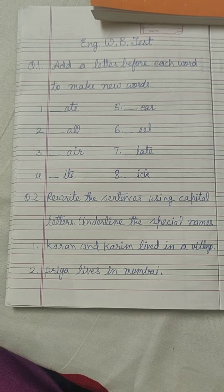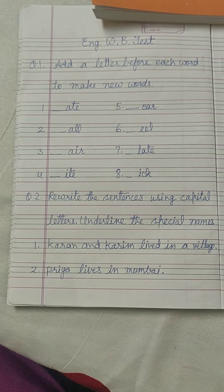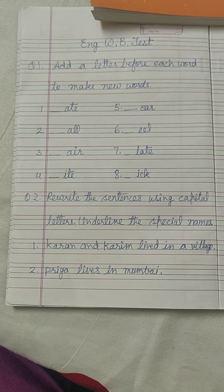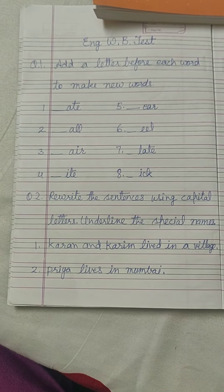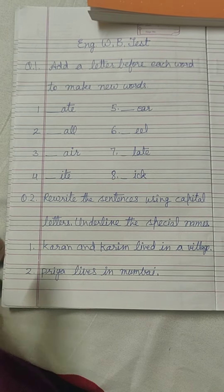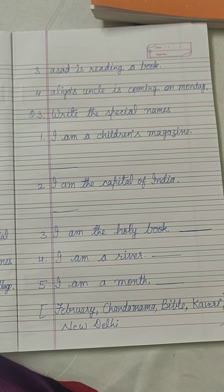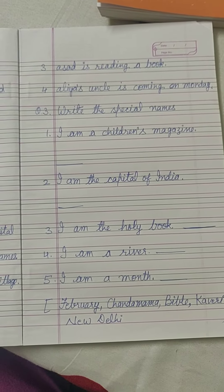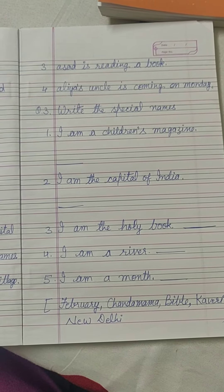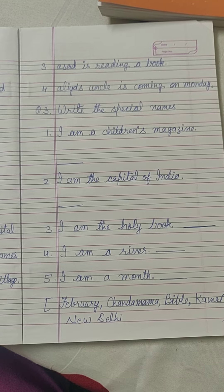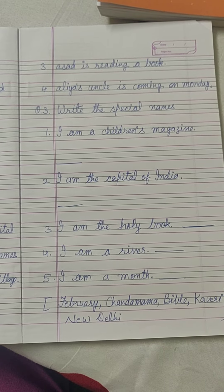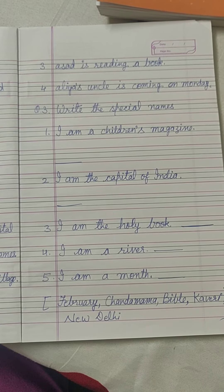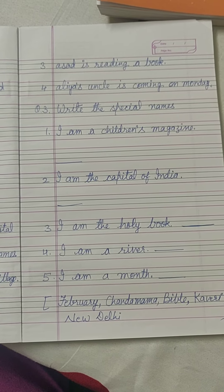First sentence: Karan and Karim lived in a village. Second: Priya lives in Mumbai. Third: Asad is reading a book. Fourth: Alia's uncle is coming on Monday.